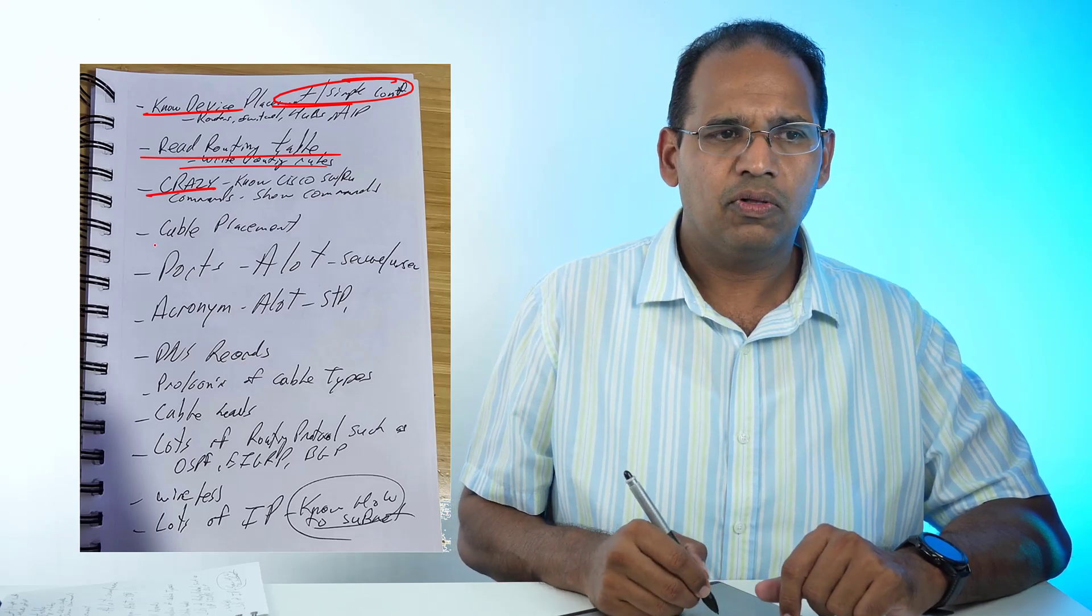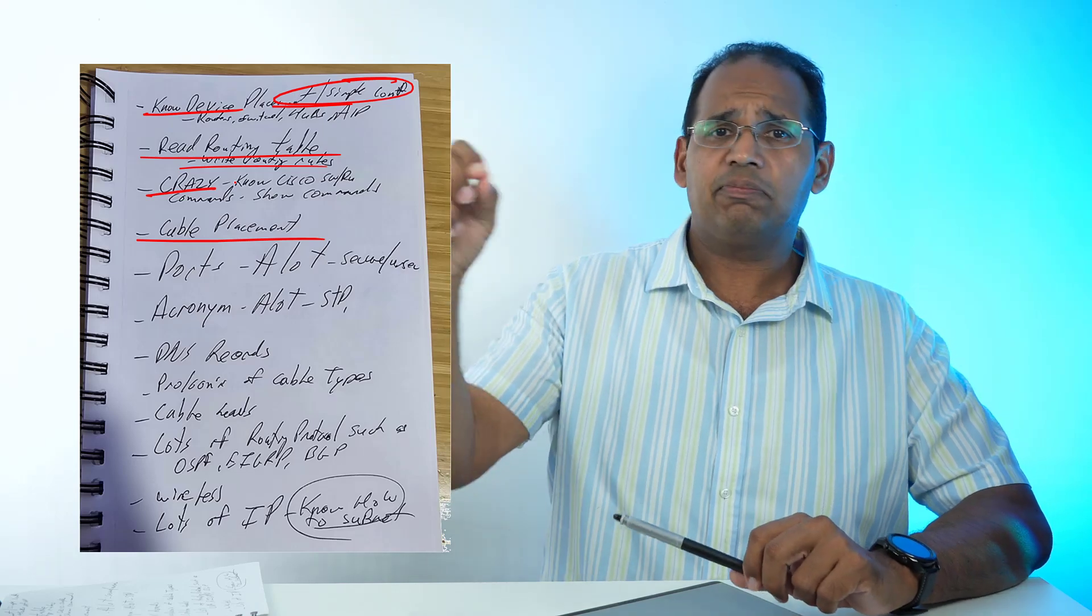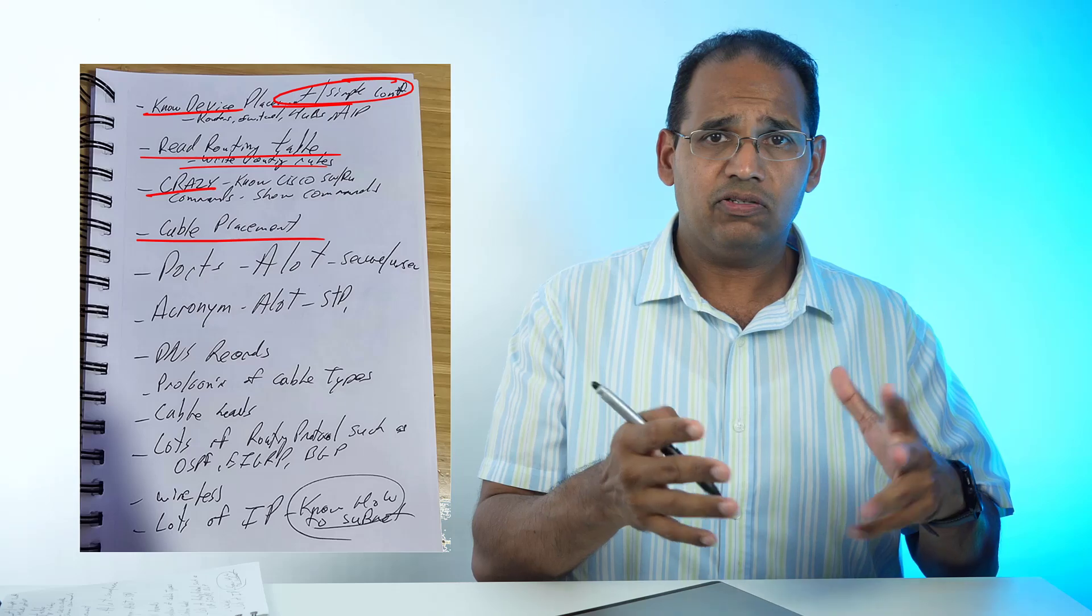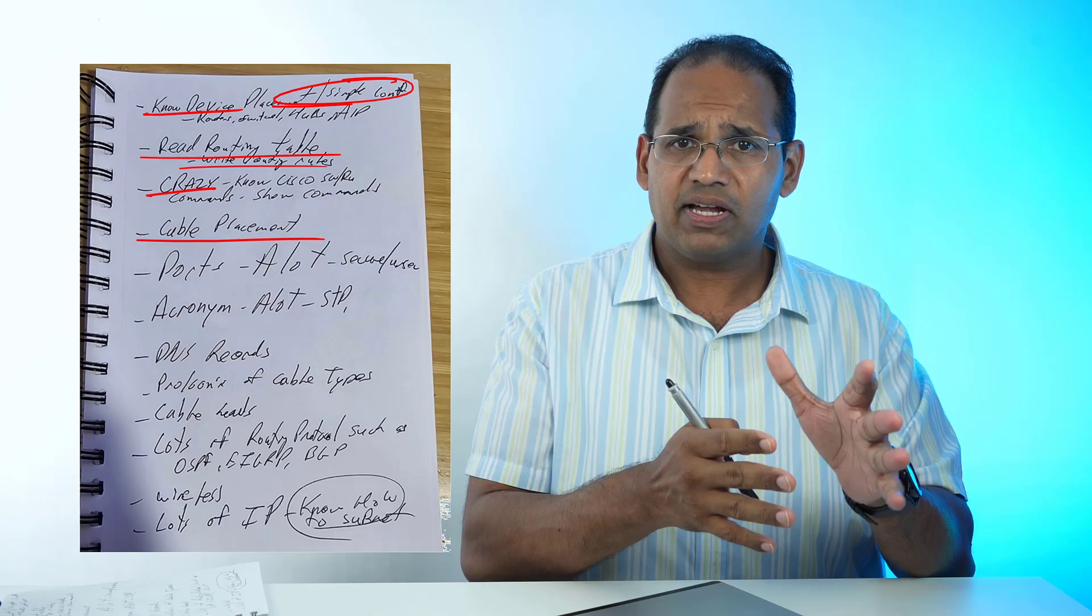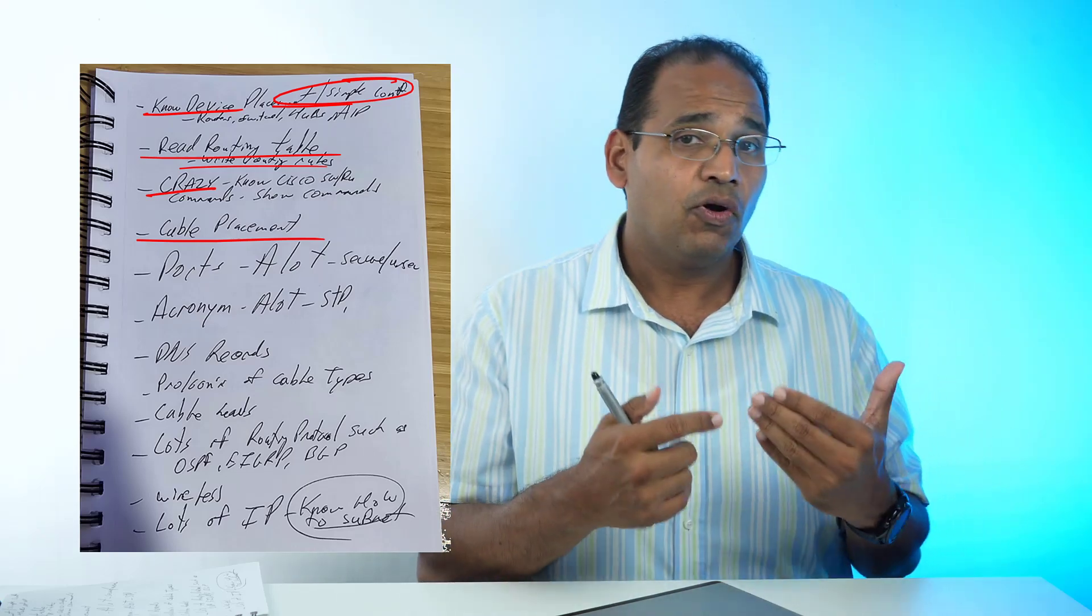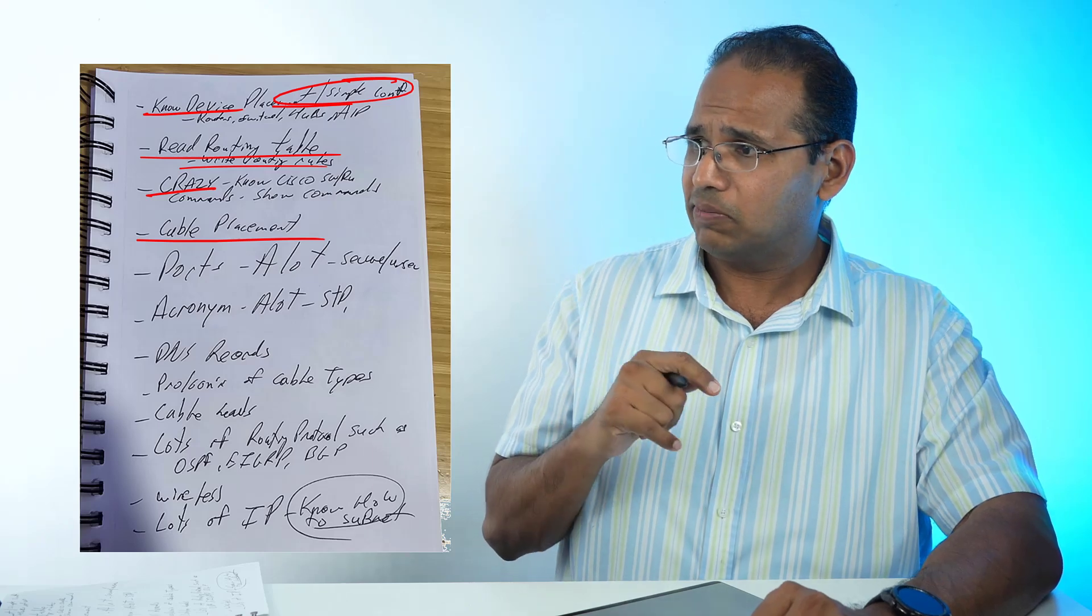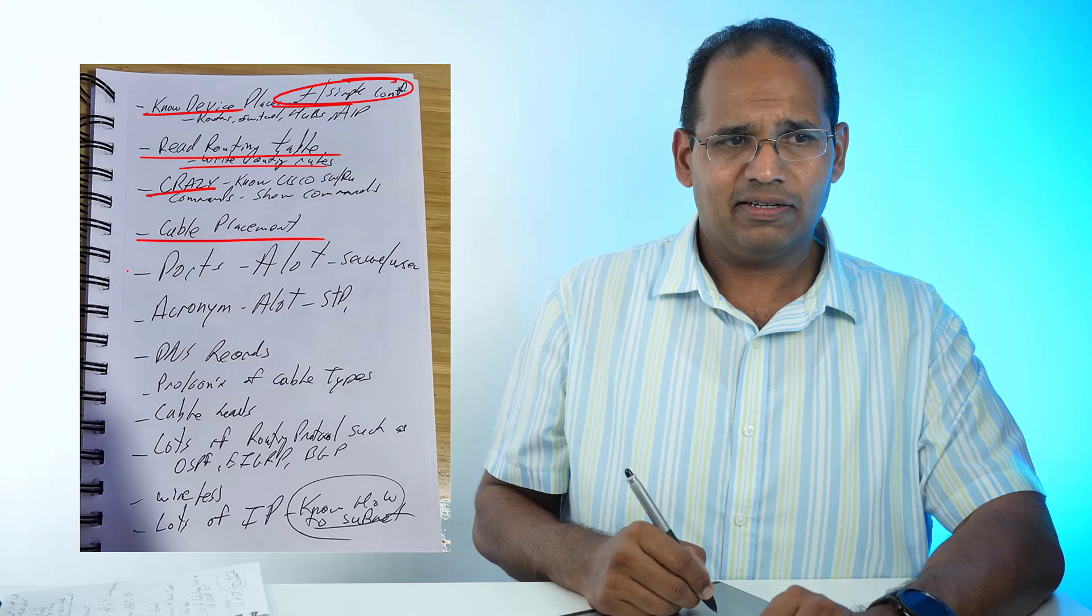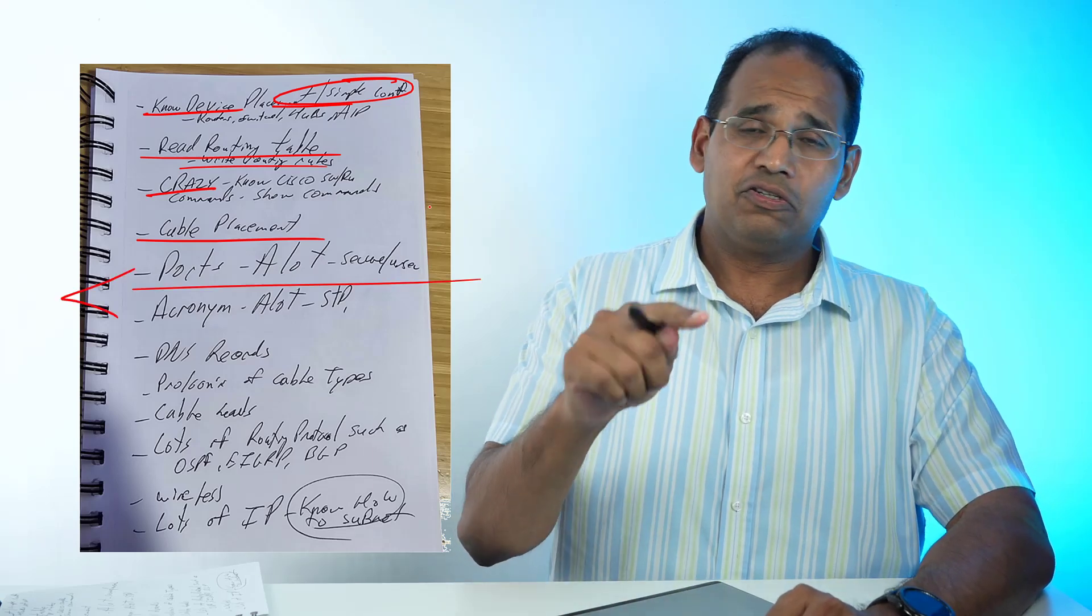You have to know cable placement—what cable belongs where. If I'm connecting this, what kind of fiber cable do I use? Can I use Cat6 here? Is this single-mode fiber or multi-mode fiber? What kind of fiber cable can I use in that section?